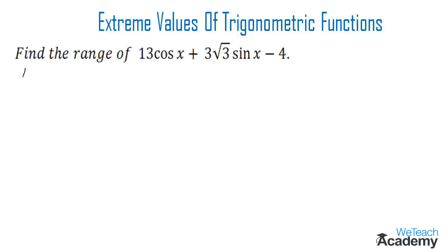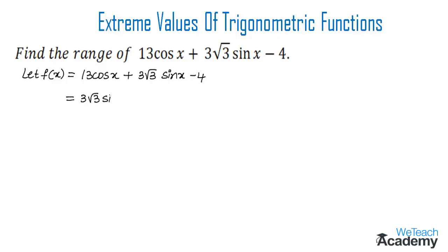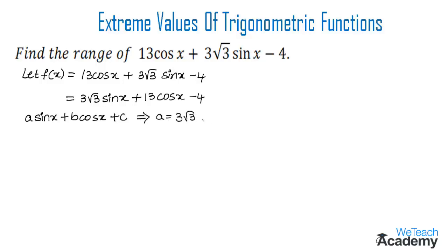Let f(x) = 13cos(x) + 3√3·sin(x) - 4. Rearranging, we get 3√3·sin(x) + 13cos(x) - 4. Comparing this with the standard form a·sin(x) + b·cos(x) + c, we get a = 3√3, b = 13, and c = -4.